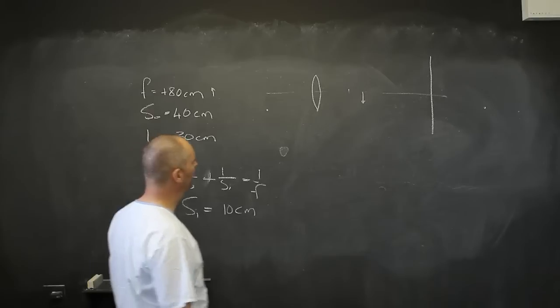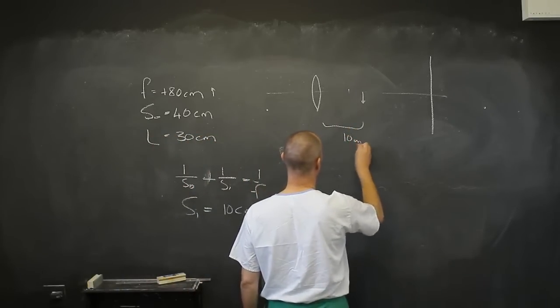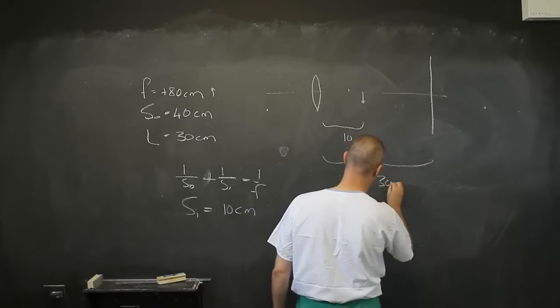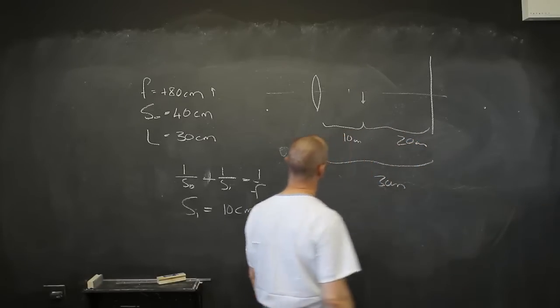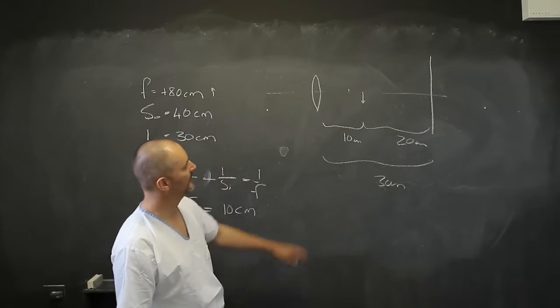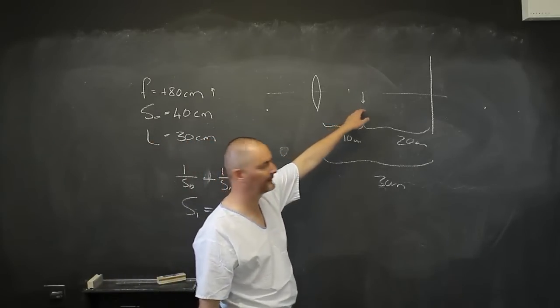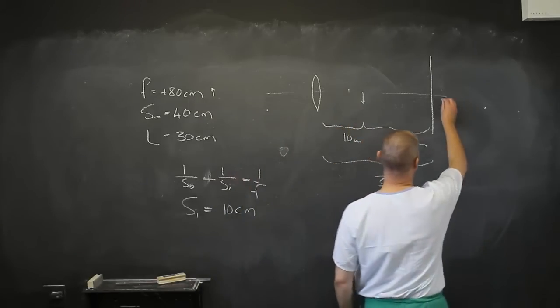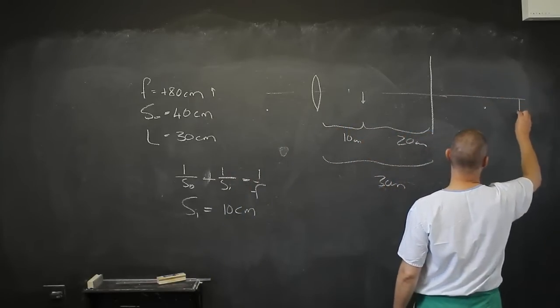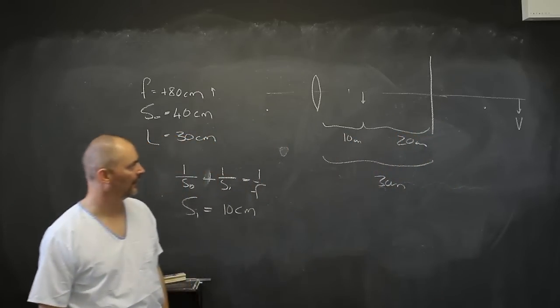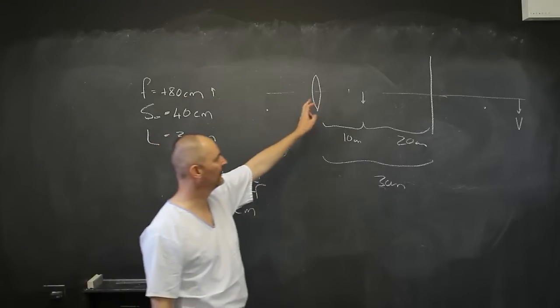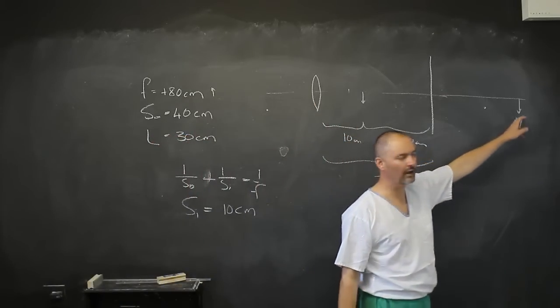Now if this is 10 centimeters and this is 30 centimeters, this means this must be 20 centimeters. So I am going to get, with no magnification, still inverted, 20 centimeters on this side. I am going to get this virtual image, which this lens is now going to see as a real object.